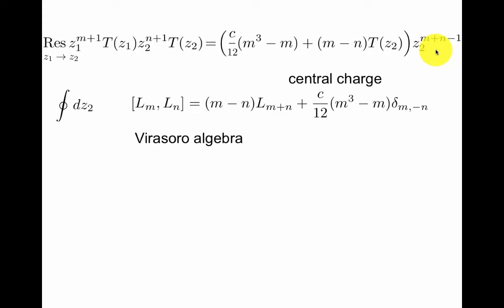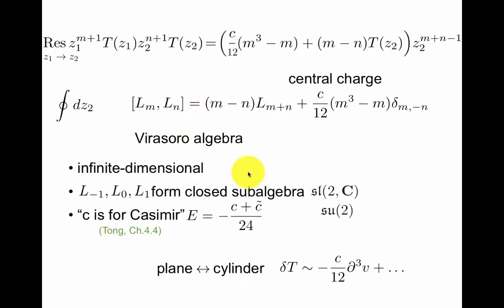So the total residue looks like that. We still have the z2 integral left. Doing that, we get the Virasoro algebra.